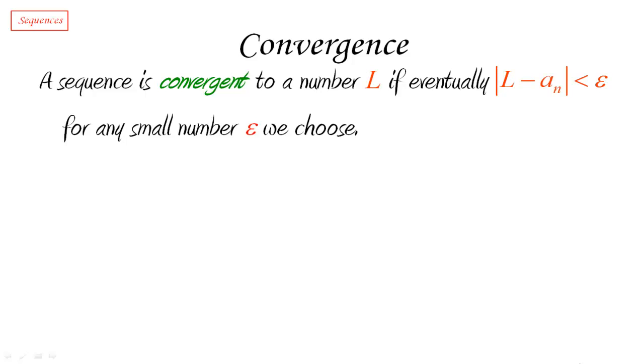Now, this epsilon is a Greek letter and it is the standard choice of a symbol in mathematics when you're trying to denote a small positive number. So what we're saying is that a sequence is convergent to a number L if the terms get closer and closer and closer to L. And you can tell that this is basically the idea of a limit, right?